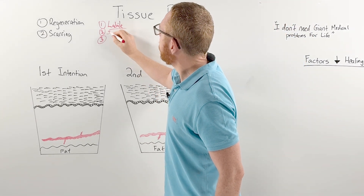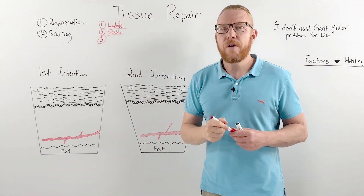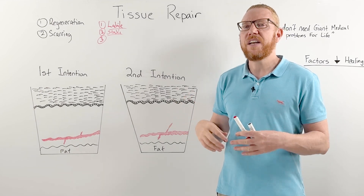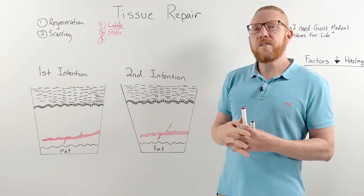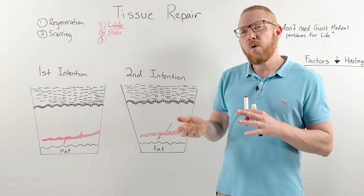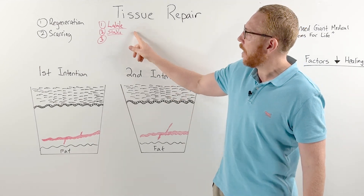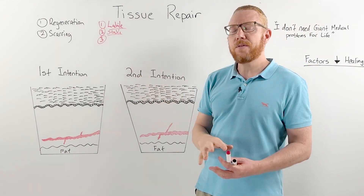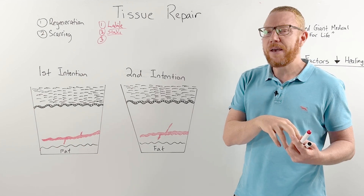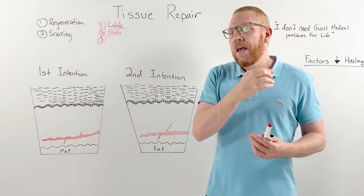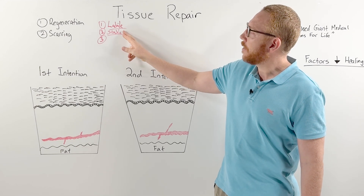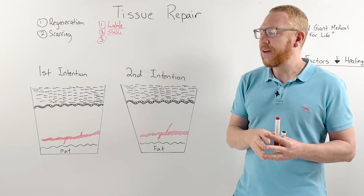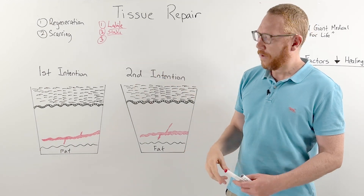The second type is stable cells. These are generally hibernating — not mitotically active, in a kind of sleeping stage. Many organs of the body fall into this category. When organs do get injured, they have the capacity to become more like labile cells and regenerate if the injury isn't too bad. A good example is the liver: if injured, it can go from a sleeping stage into a labile stage, copy itself, and go back to its original state.